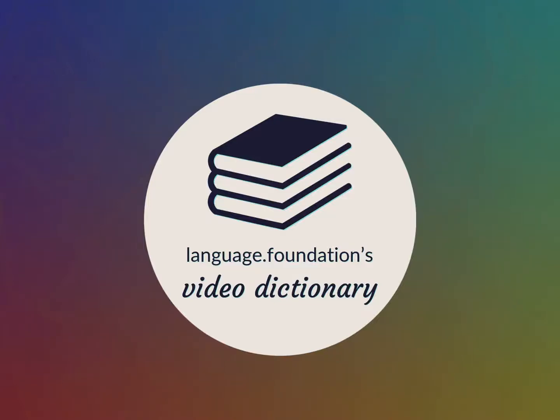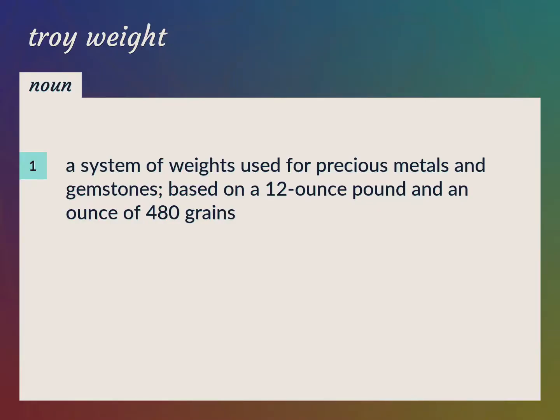Language.Foundation's Video Dictionary, helping you achieve understanding. A system of weights used for precious metals and gemstones, based on a 12-ounce pound and an ounce of 480 grains.